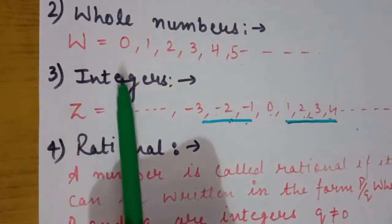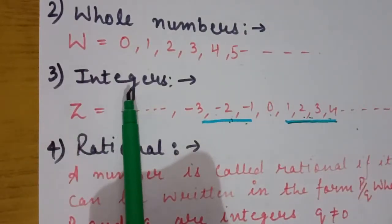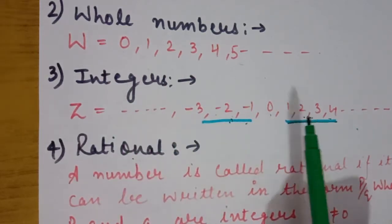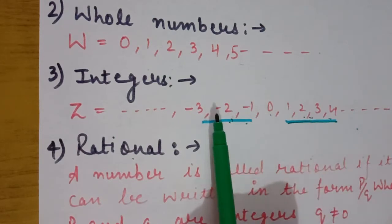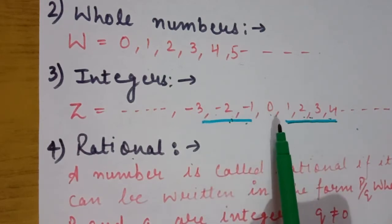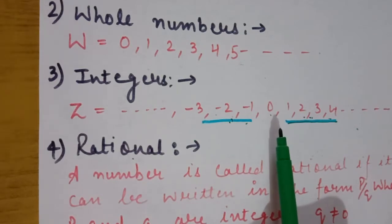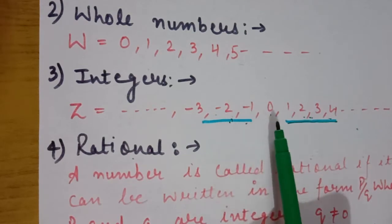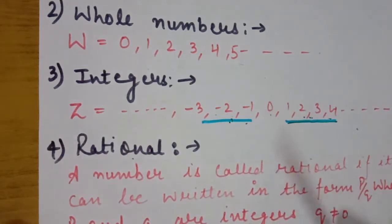Integers are those numbers which include all positive and negative numbers along with 0. So integers are the collection of all positive, negative numbers and 0.